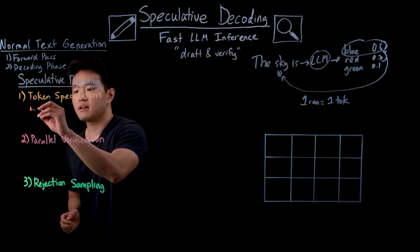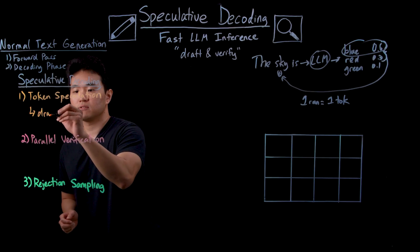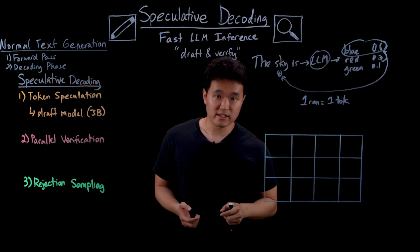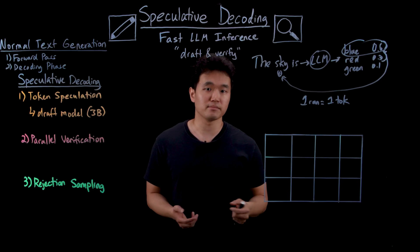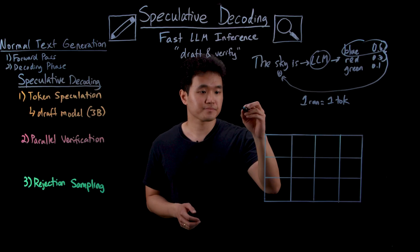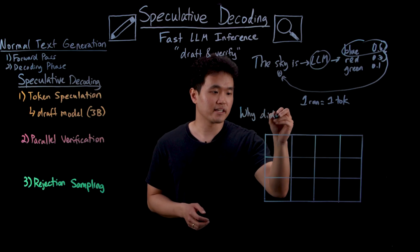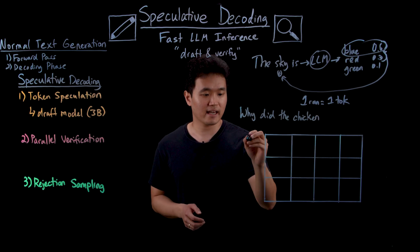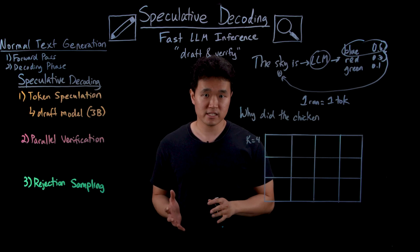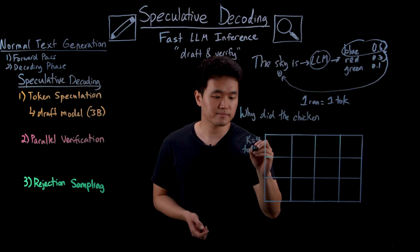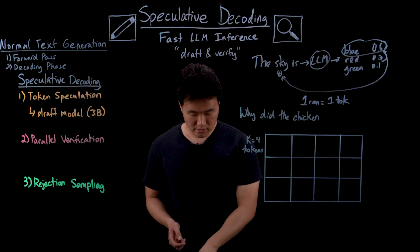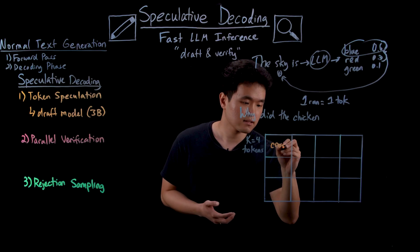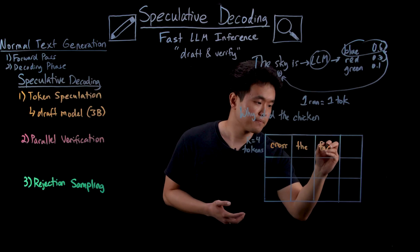First, during token speculation, a smaller draft model, say for example three billion parameters, generates k draft tokens. To help explain this, let's use a hypothetical example. Let's say that our draft model has the input why did the chicken, part of a very popular joke, and say that we set k equal to four, meaning we want the model to make a prediction of what the next four tokens are instead of just one. And say that the model speculates cross the farm question mark.